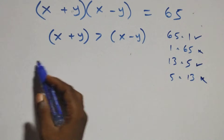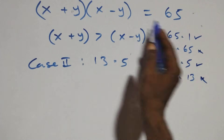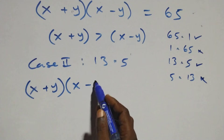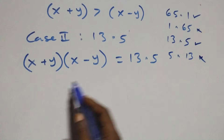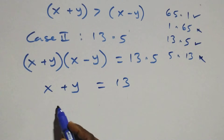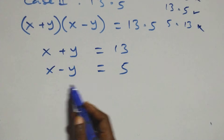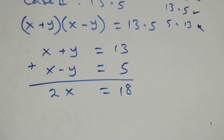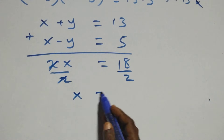Case 2 is 13×5, so the equation becomes (x+y)(x−y) = 13×5. The first bracket gives x+y = 13, and the second bracket gives x−y = 5. Solving simultaneously by adding: 2x = 13+5 = 18, and dividing both sides by 2 gives x = 9.